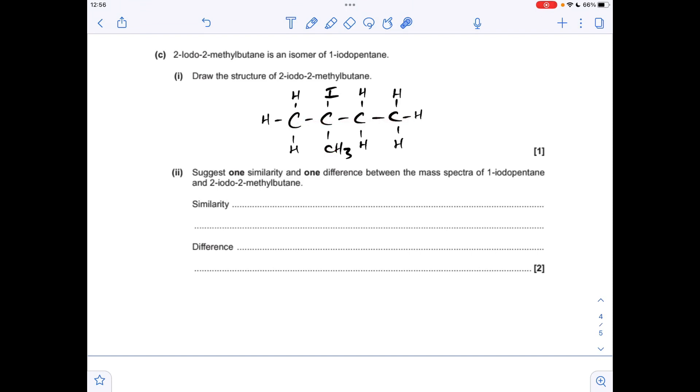And the last part of the question, one similarity and one difference between the mass spectra of 1-iodopentane and 2-iodo-2-methylbutane. Well, the similarity is going to be they'll have the same molecular ion peak at M over Z 198.